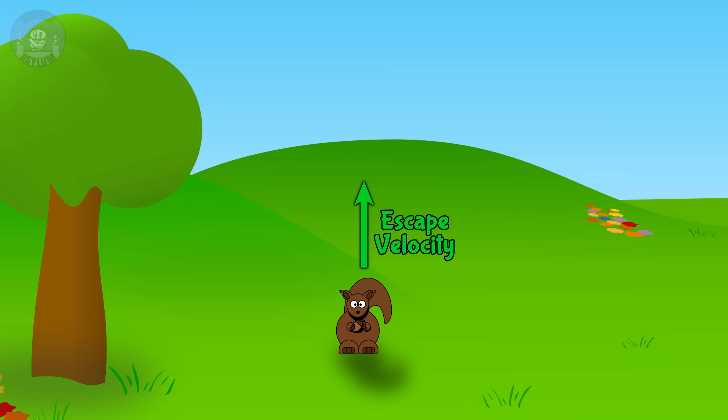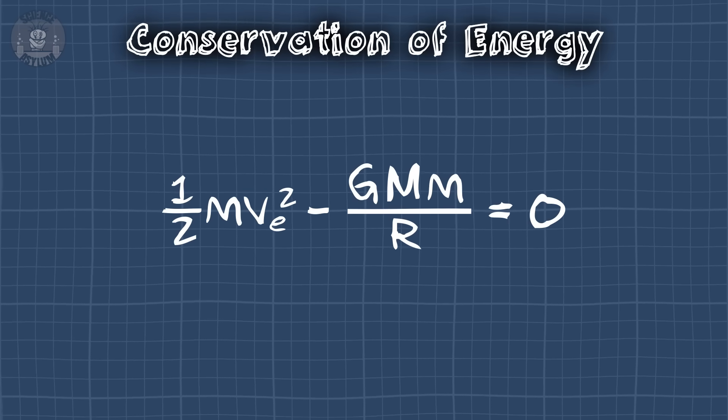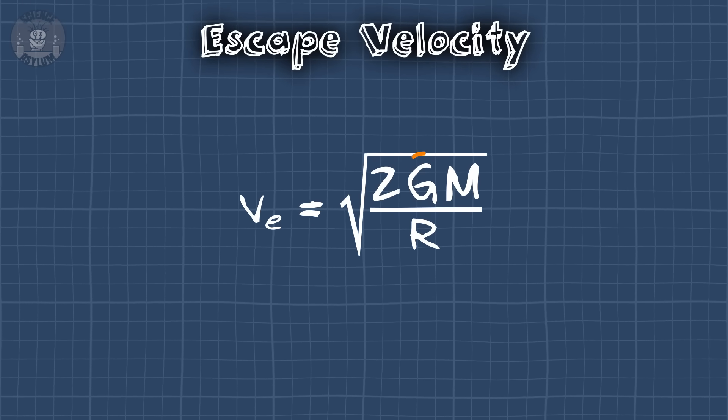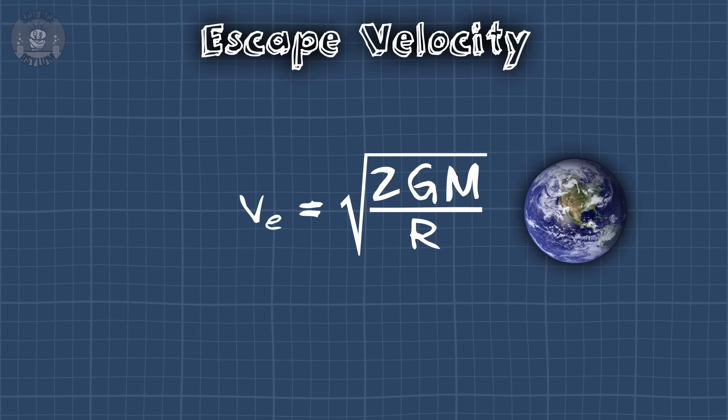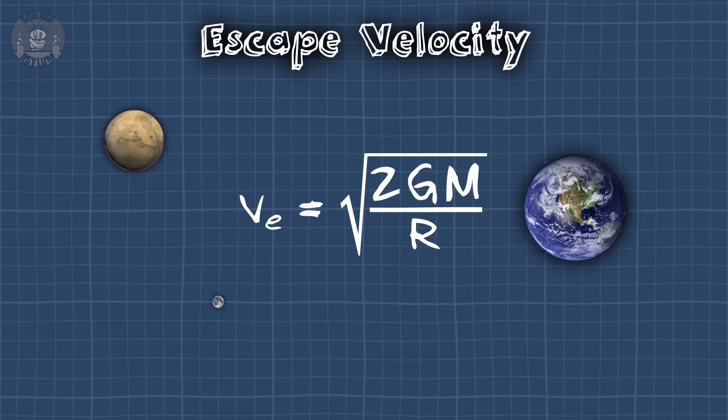Anyway, how fast does this thing need to go to escape? Well, considering the energy transformation, it comes out to be this. G is a constant. These two are the mass and radius of the Earth, or whatever you're launching from. Mars, the Moon, whatever.